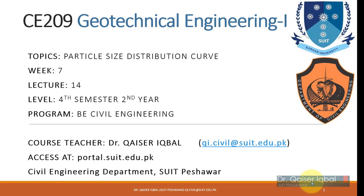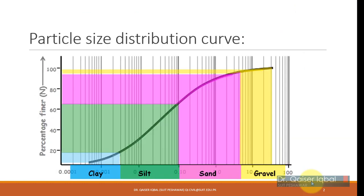Today we are going to discuss the particle size distribution curve. In previous lectures on soil grain size analysis, we studied two methods to plot this curve: sieve analysis for the coarse grain portion and hydrometer analysis for the fine grain portion. We then plotted the combined gradation curve. Today we discuss the uses of this curve — how we can utilize it to classify a particular soil or distinguish one soil from another.